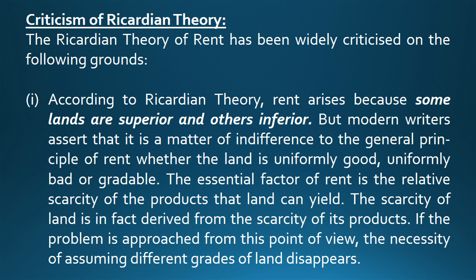Criticism of Ricardian Theory. The Ricardian theory of rent has been widely criticized on the following grounds. One: according to Ricardian theory, rent arises because some lands are superior and others inferior. But modern writers assert that it is a matter of indifference to the general principle of rent whether the land is uniformly good, uniformly bad or gradable. The essential factor of rent is the relative scarcity of the products that land can yield. The scarcity of land is in fact derived from the scarcity of its products. If the problem is approached from this point of view, the necessity of assuming different grades of land disappears.